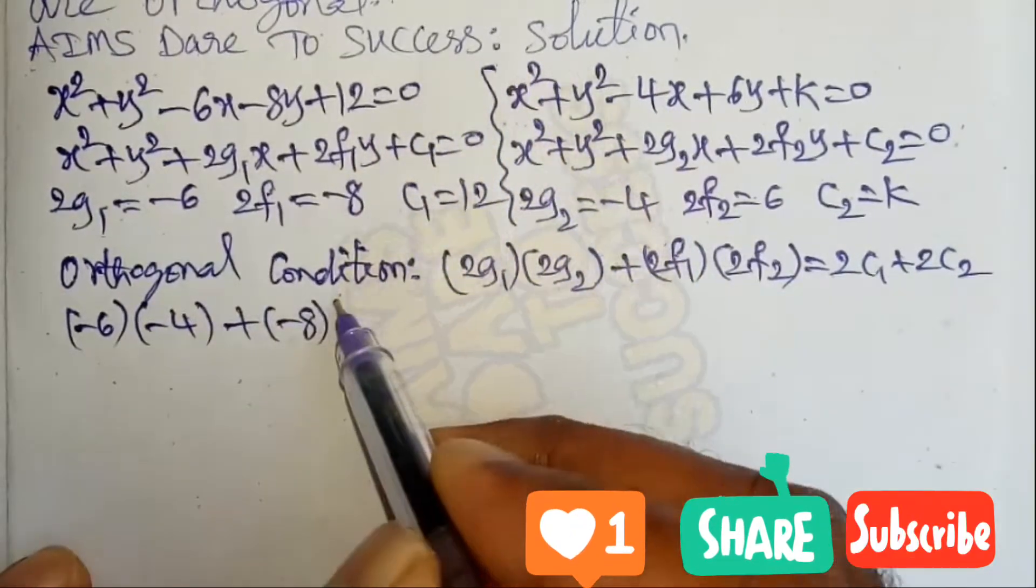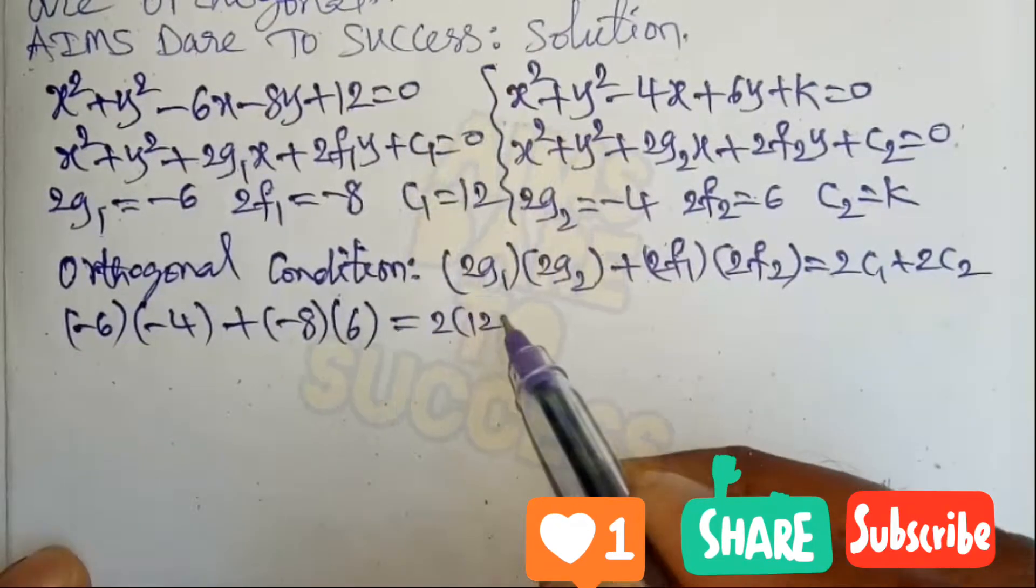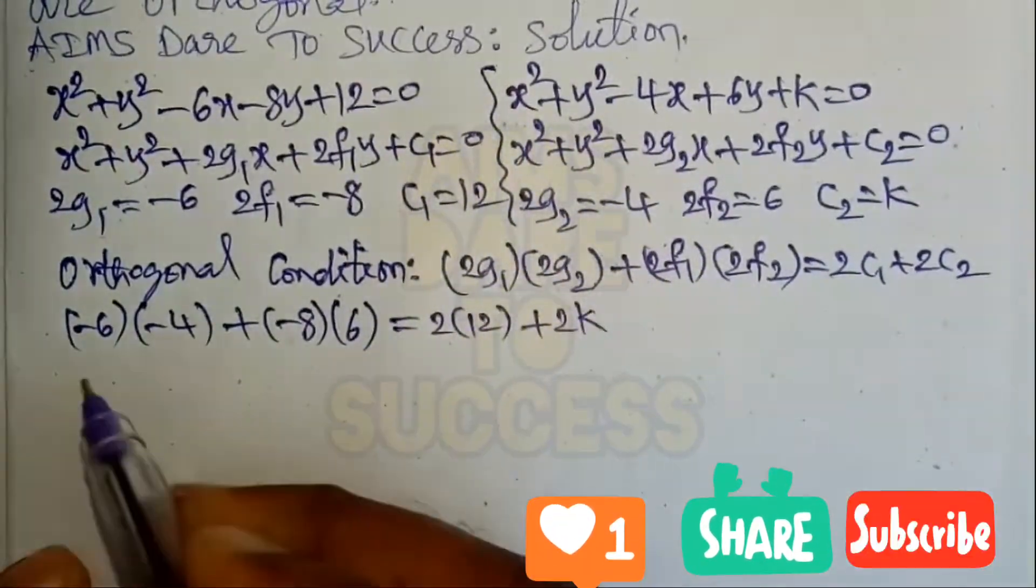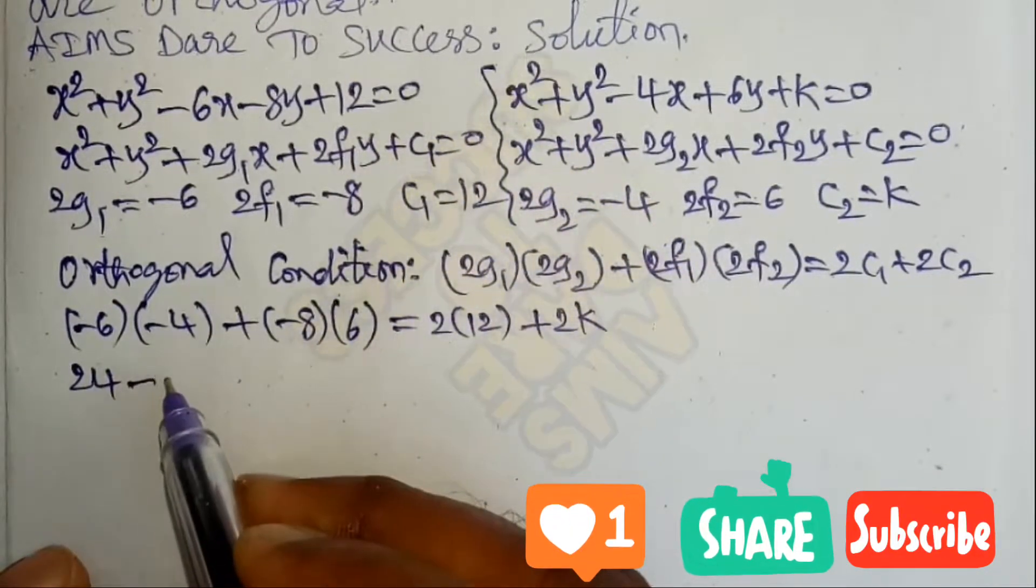We get 2g₁ = -6, 2g₂ = -4, plus 2f₁ = -8 into 2f₂ = 6, equals 2 into c₁ = 12 plus 2 into c₂ = k.